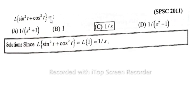Solution: Since Laplace of sin square t plus cos square t, and sin square t plus cos square t value equal to 1, so Laplace of 1 is equal to 1 divided by s. Option C is correct.